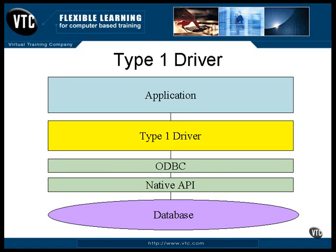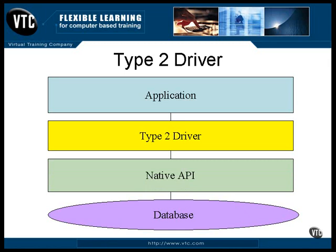Sun's Java site states that type 1 drivers should not be put into production — they should only be used to prototype systems. A type 2 driver is like a type 1 in that it communicates through the native API of the database, but it makes the calls directly to the API instead of going through an intermediary bridge. This is a more efficient driver because it skips that intermediate step of the bridge.